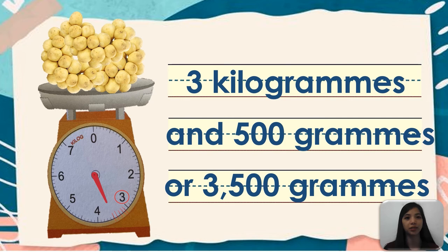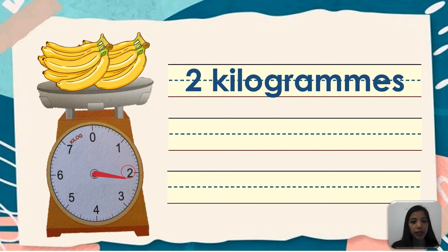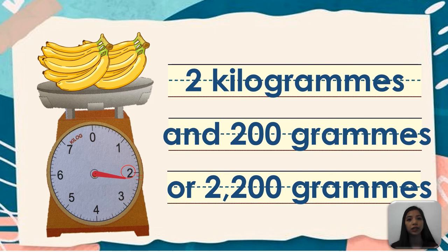Okay, last example, we have here 2 bunches of bananas. So the pointer points near at 2 kilogram marks. So meaning to say we will put 2 kilograms. And then first, 2nd division. So 2nd division, that is 200 grams. So 2 kilograms and 200 grams or 2,200 grams.